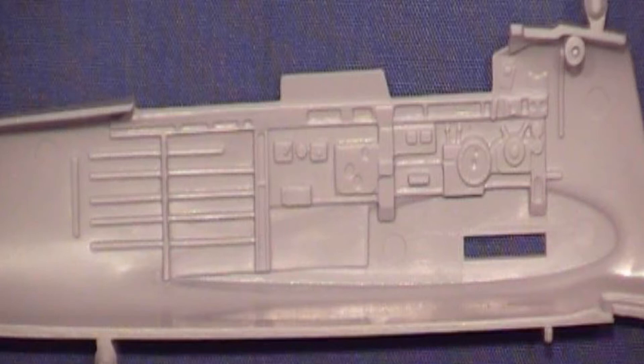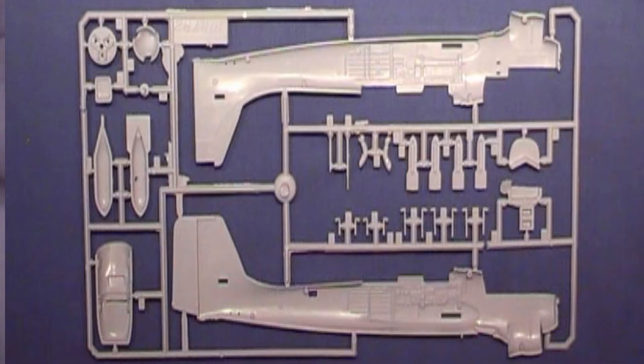I mean, I suppose you could get photo etched, carve all that lot off and put the photo etch in. But for the price of this kit, I wouldn't bother. The detail's fine enough in there. You may be able to add a few wires and such like in there, pipe work. But I would be happy with that as is.